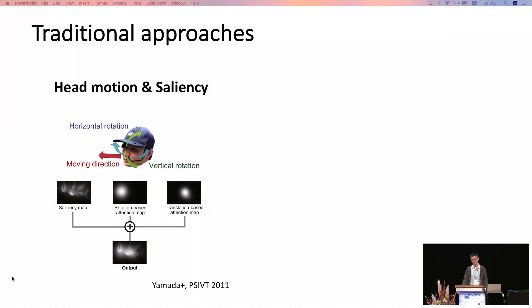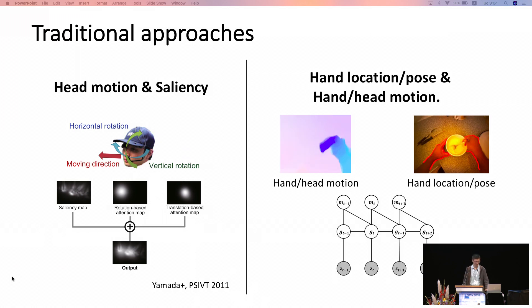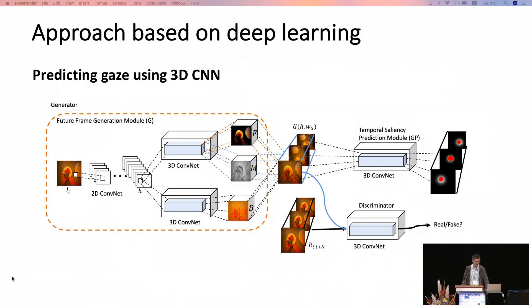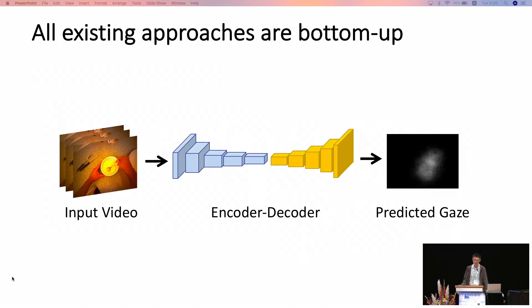There are traditional approaches using special ego-centric cues like head motion, saliency, hand location, pose, and hand-head motion. With the rise of deep learning, some works use 3D CNNs, and the deep learning network can leverage all these ego-centric cues implicitly, achieving better performance.